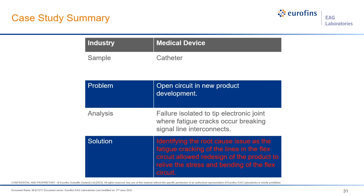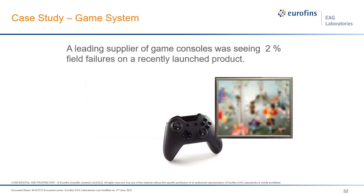To summarize: we were looking at a medical device catheter with an open circuit during new product development. We isolated the failure to the tip at the electronic joint, where fatigue was occurring and the signal line was breaking — right where the flex circuit attaches to a more sturdy PCB. They were then able to identify this as an issue and redesign the part slightly to remove the flexing and bending of the flex circuit, which fixed the issue.